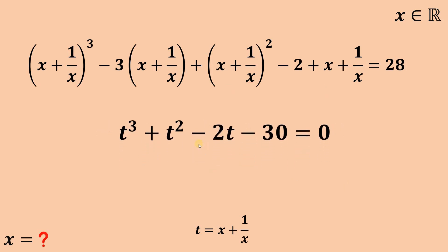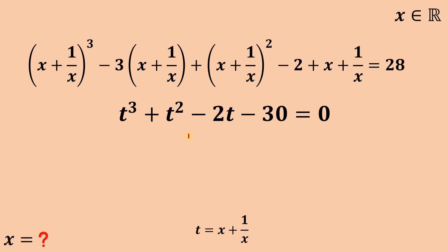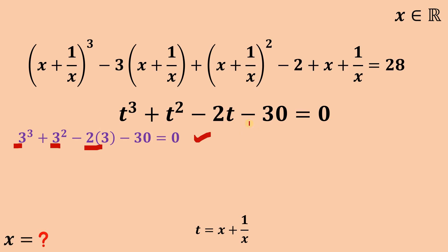Now let's focus on this equation. One thing to notice is if we let t equal 3, this expression equals 0. We have 3 cubed is 27, plus 3 squared is 9, giving 36, minus 6 is 30, and 30 minus 30 is 0. It follows that t minus 3 is a factor of this cubic polynomial.